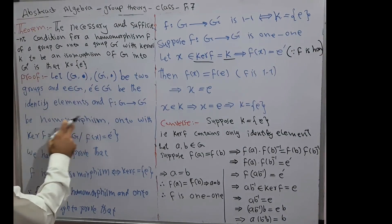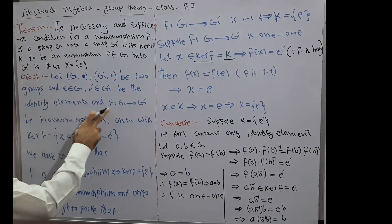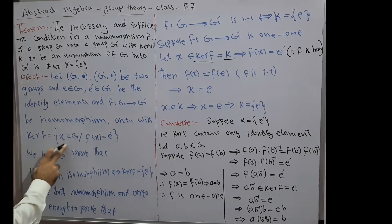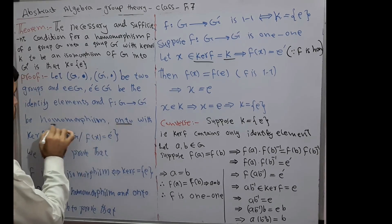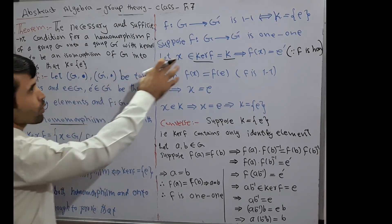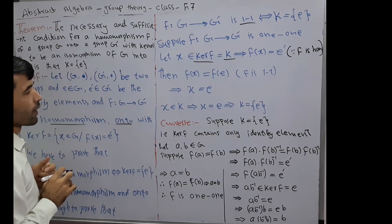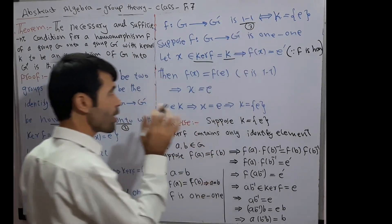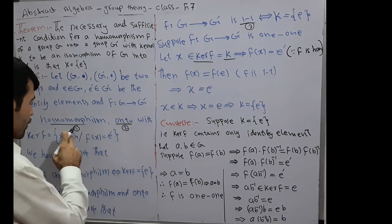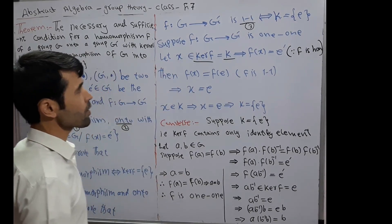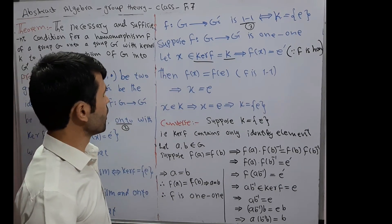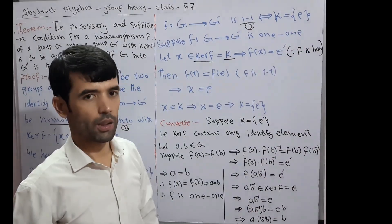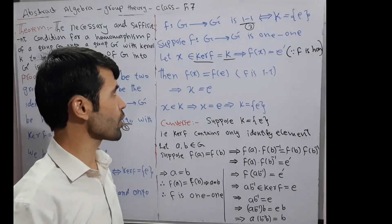We assume F: G → G' is a homomorphism onto, with kernel F defined. A mapping F satisfies three conditions — one, two, three — then we say that mapping is isomorphism. Now we want to prove that F is one-one if and only if K = E, where K is the kernel equal to the identity element E of G.